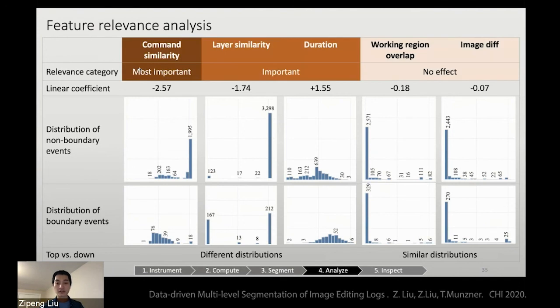Based on the above evidence, we conclude that we can categorize these five features into three bins: the most important, important, and no effect.